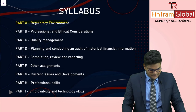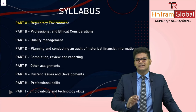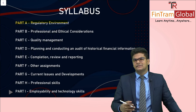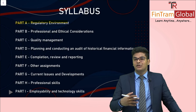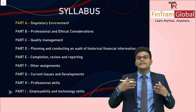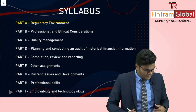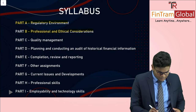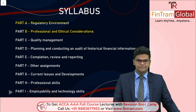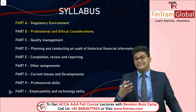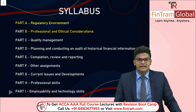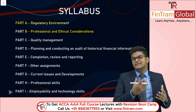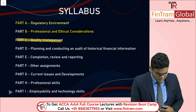Syllabus Part A covers the regulatory environment — the international regulatory environment for the audit profession, where we learn about the basic laws and regulations that regulate it. Part B covers professional and ethical considerations. Identifying professional or ethical issues from a scenario is a common question in the AAA exam, and this is the area where we learn the theoretical aspects relating to it.